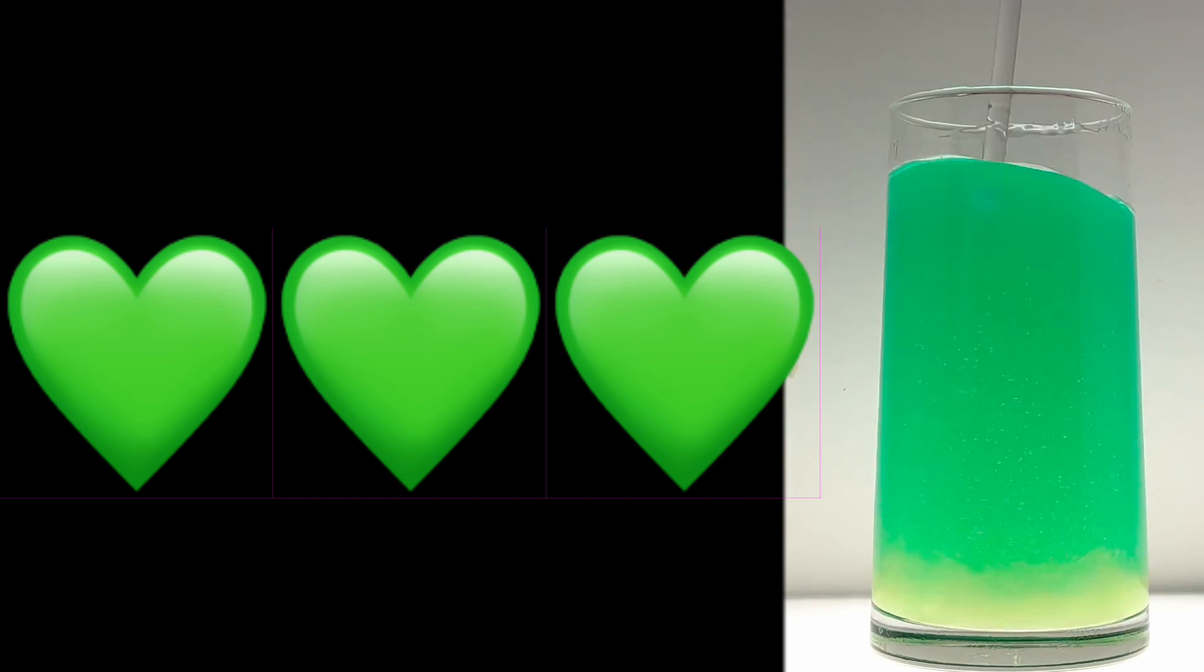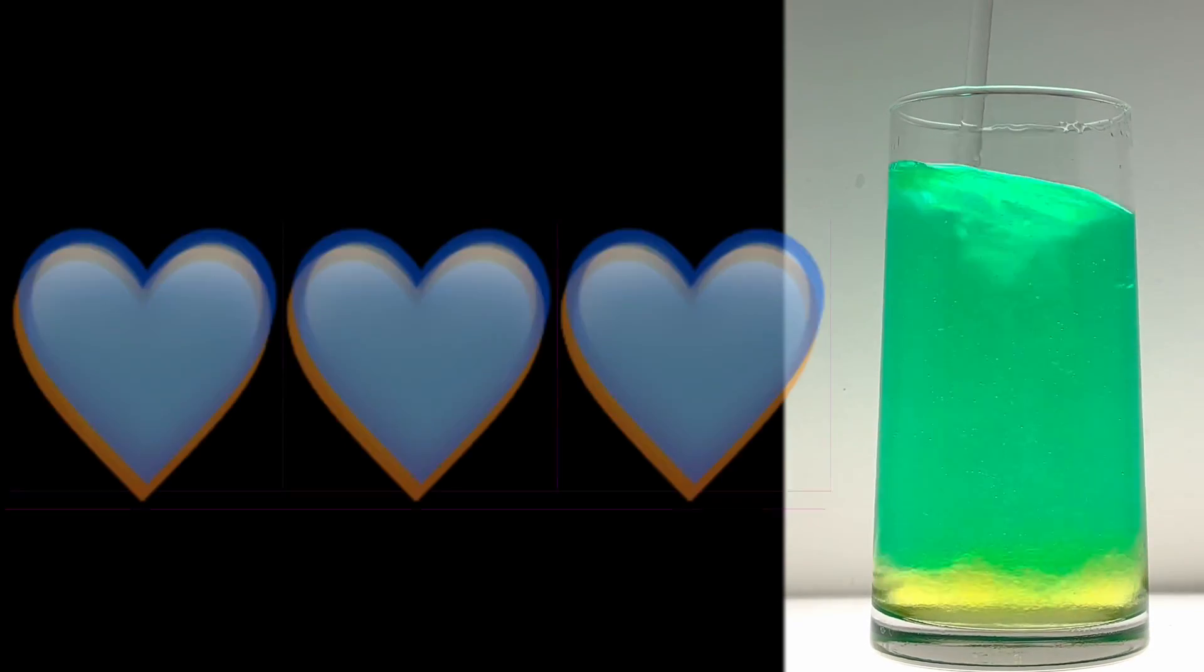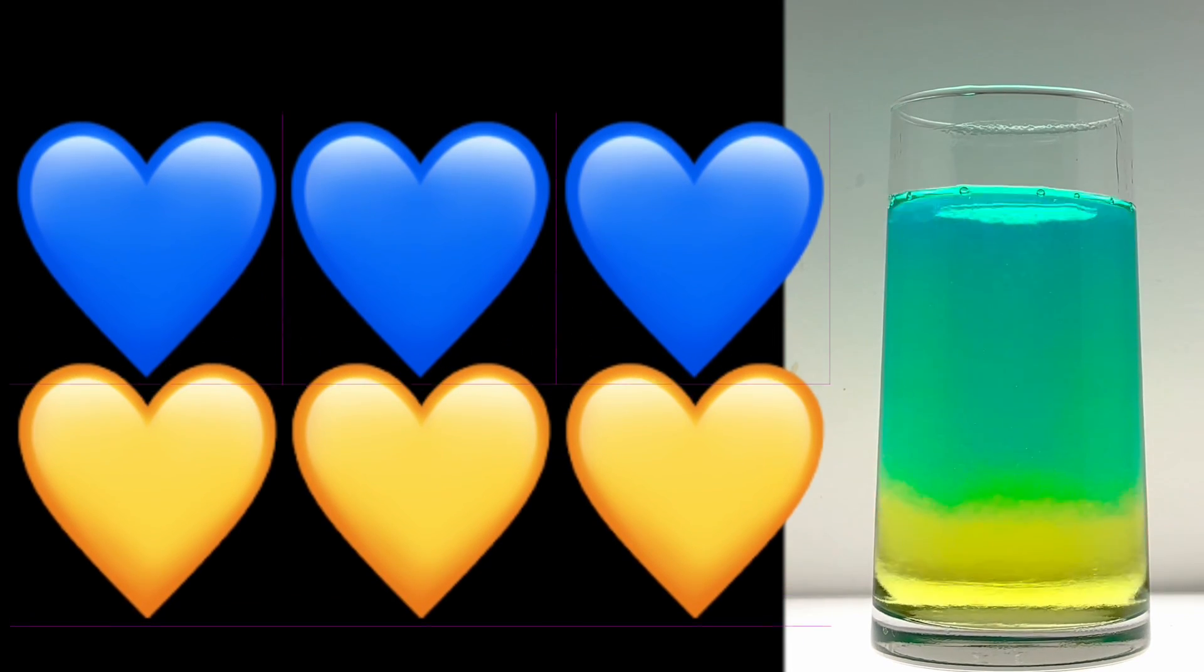But why does the green dye separate into blue and yellow? Well, the green dye actually is a combination of blue and yellow dyes. And the chemistry of each dye offers clues into why the separation occurs.